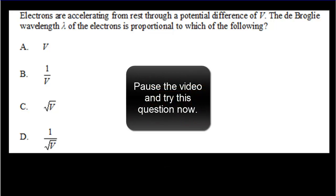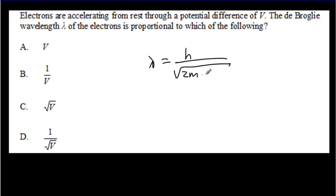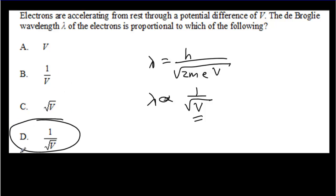For an IB question: using the equation lambda equals h divided by the square root of 2meV, you can see that lambda varies as 1 over the square root of the voltage. So that would be answer D.